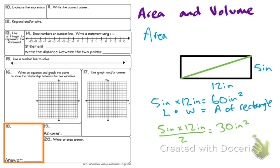So 5 inches times 12 inches divided by 2 is equal to 30 inches squared.